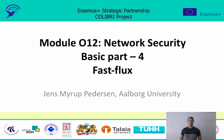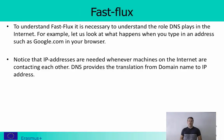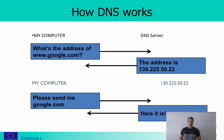Hello everyone, welcome to part four of the basic module in network security, where I will give a short introduction to fast flux. But before we start with fast flux, I will show you how DNS works, because that's an important concept to understand. When machines communicate with each other over the internet, they use IP addresses. When you type an address like google.com in your browser, you first send a request to a DNS server asking for the IP address of google.com.